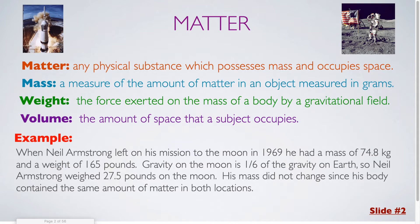Volume: the amount of space that a subject occupies. So, an example which brings all of these terms together could be when Neil Armstrong left on his mission to the Moon in 1969. He had a mass of 74.8 kg and a weight of 165 pounds. Since gravity on the Moon is one-sixth of the gravity on Earth, Neil Armstrong weighed 27.5 pounds on the Moon. His mass did not change since his body contained the same amount of matter in both locations. His volume was also constant.